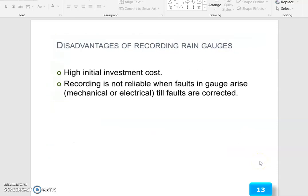The disadvantages of recording rain gauges: high initial investment cost. It is not an easy task because now we have to invest more money. Recording is not reliable when fault in gauge arises, mechanical or electrical, till faults are corrected.